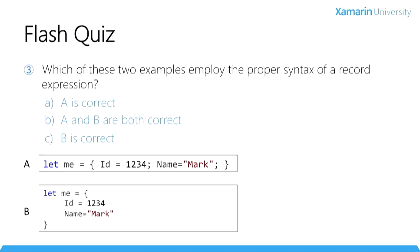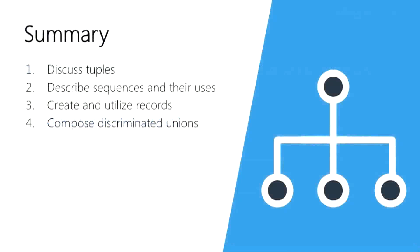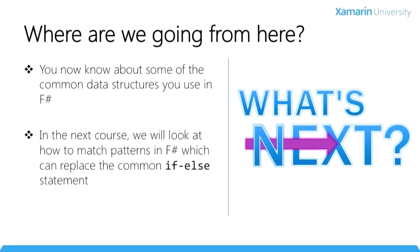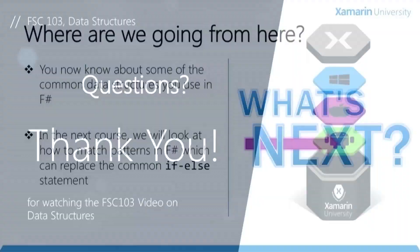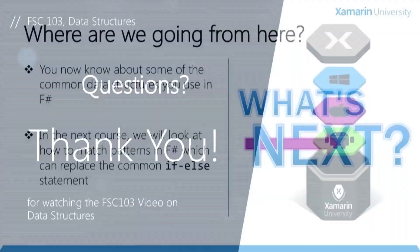You've just had a look at some of the core data structures in F-Sharp: tuples, sequences, records, and discriminated unions. In your next steps, you'll learn how to use pattern matching — you saw some examples of that today — and you'll also be introduced to an amazing concept in F-Sharp called partial application. Thanks for watching this video on data structures with F-Sharp. I've been Glenn Stevens, and thanks again for watching another video from Xamarin University.